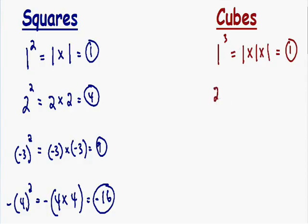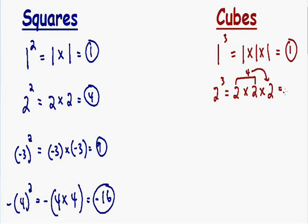Let's say we had 2 cubed. That means we need to multiply the number 2 by itself 3 times. 2 times 2 is equal to 4, and 4 times 2 is equal to 8. So 2 cubed is equal to 8.